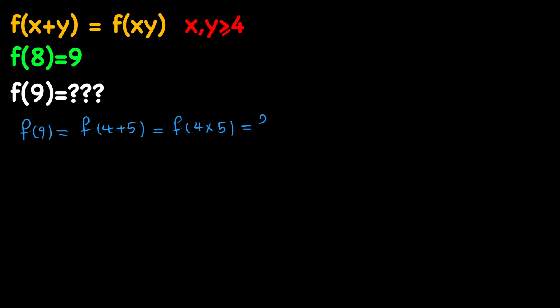Now, four times five is 20, and 20 can be written as four plus 16. Now, doing the same thing and turning the sum into a product, we will have f of four times 16. And four times 16 is just 64. And notice that 64 is eight squared. So we can say that this equals f of eight times eight.